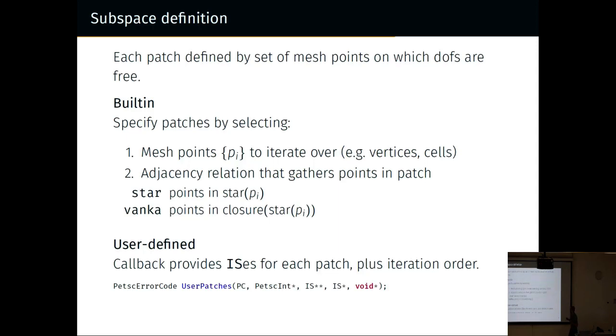We have some built-in things. We can specify patches by selecting the set of mesh points to iterate over, for example vertices or cells, and an adjacency relation that gathers points in a patch. Because this is DMPlex, we use the language that you always have to look up what this means. I've got some diagrams on the next slide. We have user-defined callbacks as well if these built-in ones don't do what you want. You build a list of ISs where each IS specifies the points you want to solve for, and you can provide an iteration order. You can do typewriter sweeping and all this kind of stuff.